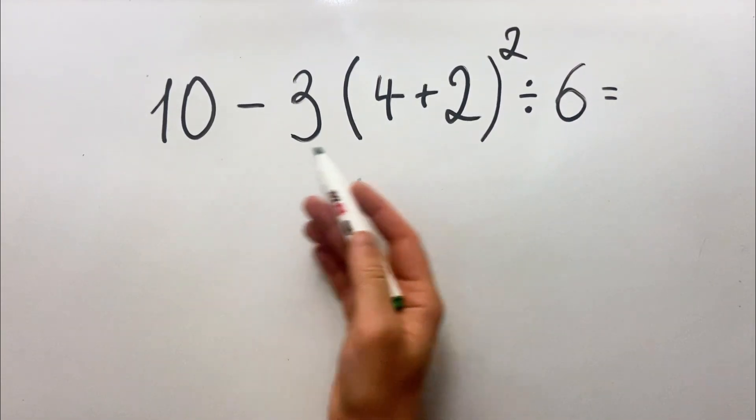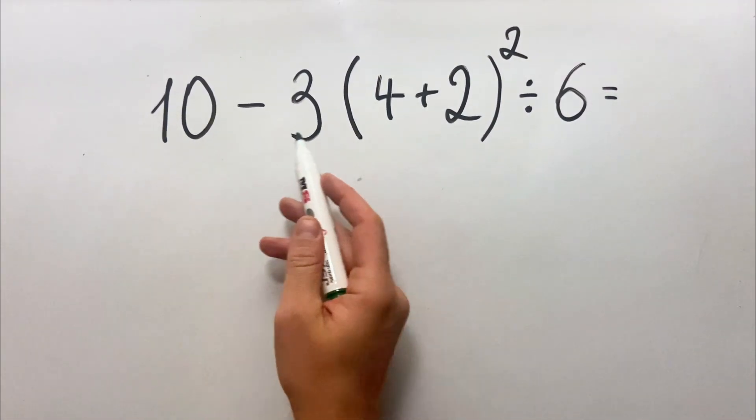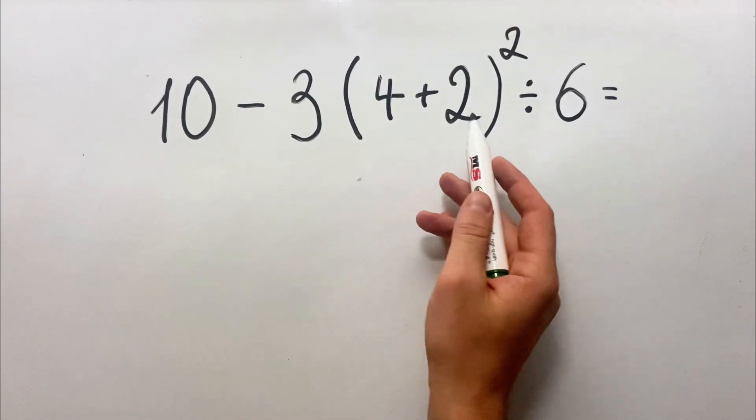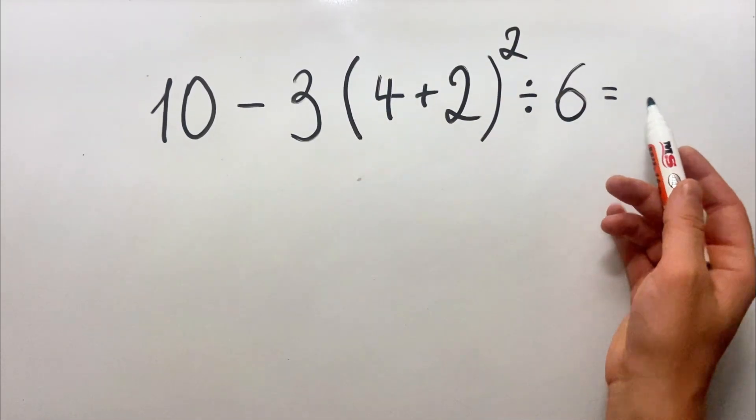Hello everyone. Today we have the following expression: 10 minus 3 times 4 plus 2 squared divided by 6.